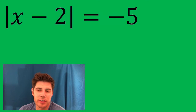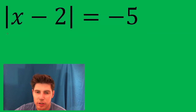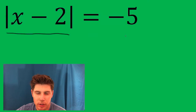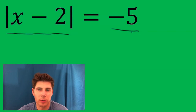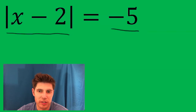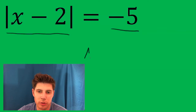Hey guys, so now we're going to solve this absolute value equality. You have an absolute value and it's set equal to negative 5. Now an absolute value is always a positive number, so this is actually impossible. So it's no solution.